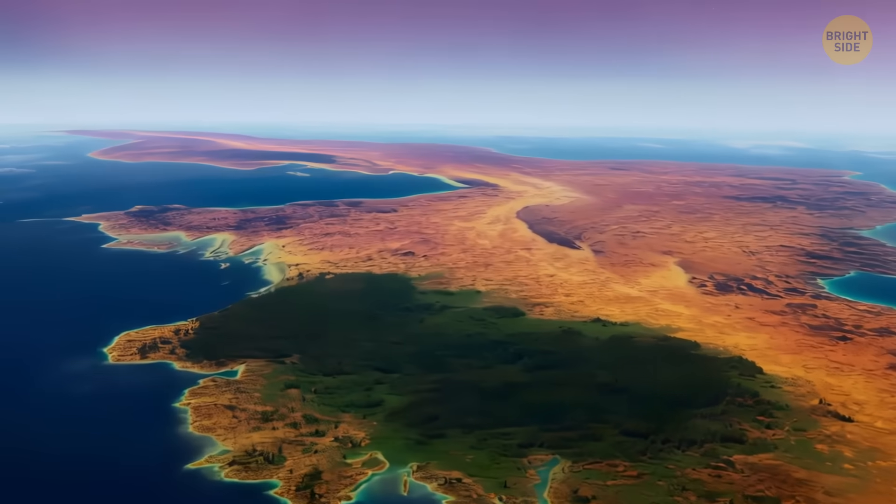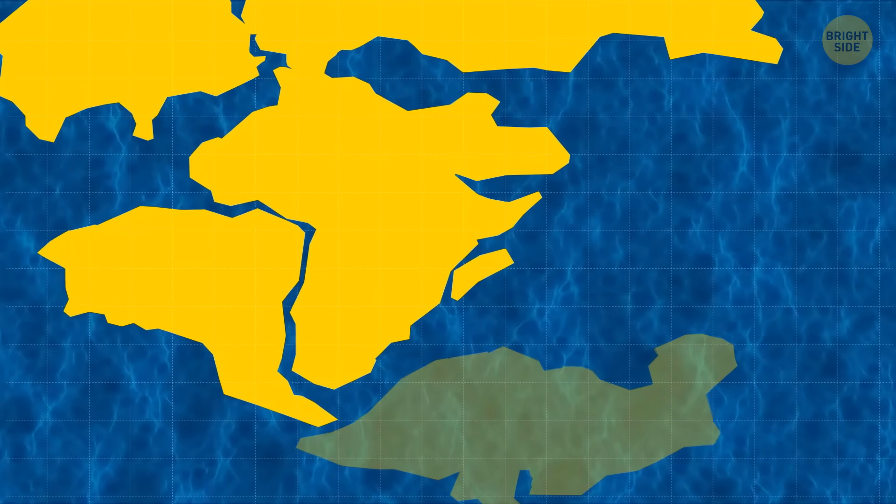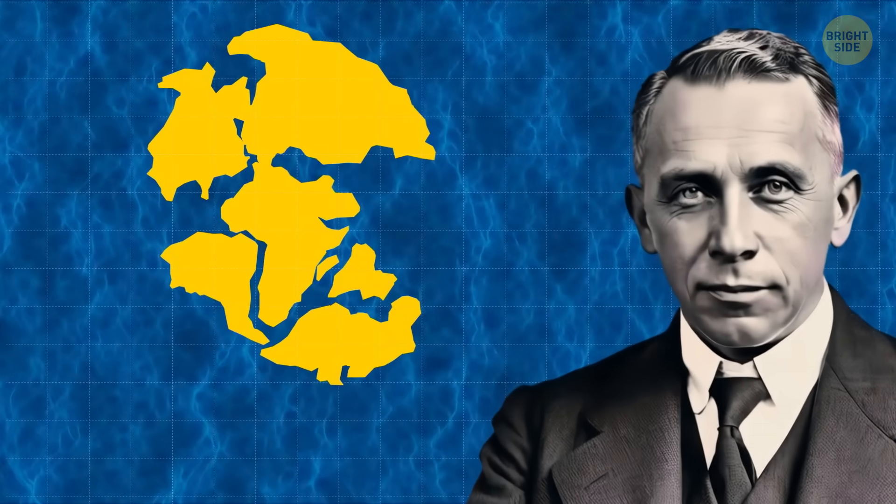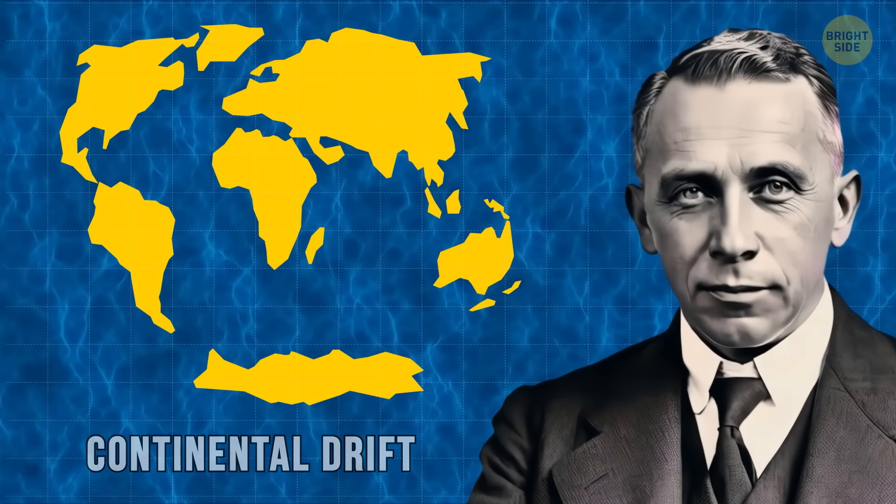But it's obvious to us now. At the time of Wegener's discovery, there were different ideas flying around. Some folks thought that the continents sank down to make the oceans. But Wegener had a different take. He thought that the continents are always on the move. He even came up with a fancy phrase, continental drift, to explain it.